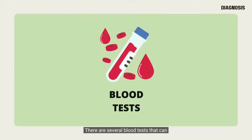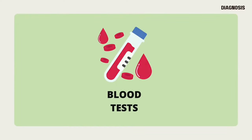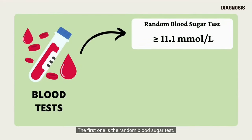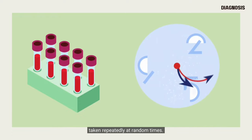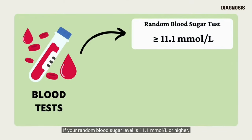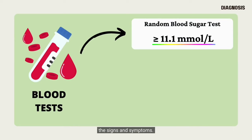There are several blood tests that can be done to diagnose type 1 diabetes. The first one is the random blood sugar test, in which the blood sample is taken repeatedly at random times. If your random blood sugar level is 11.1 millimoles per liter or higher, you may have diabetes. The chance increases if you also have the signs and symptoms.